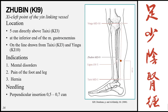Zhubin, Kidney 9, is the Xi Cleft point of the Yin Linking Vessel, located 5 cun directly above Taixi, at the inferior end of the gastrocnemius muscle, on a line drawn from Taixi (Kidney 3) to Yingu (Kidney 10). Indications: mental disorders, pain of the foot and leg, and hernias. Needling: perpendicular 0.5 to 0.7 cun.